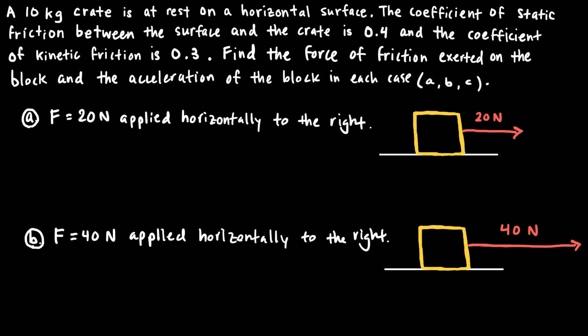In this video, I'm going to work out a simple example to help us better understand the difference between static and kinetic friction. A 10 kilogram crate is at rest on a horizontal surface. The coefficient of static friction between the surface and the crate is 0.4, and the coefficient of kinetic friction is 0.3. Find the force of friction exerted on the block and the acceleration of the block in each case.